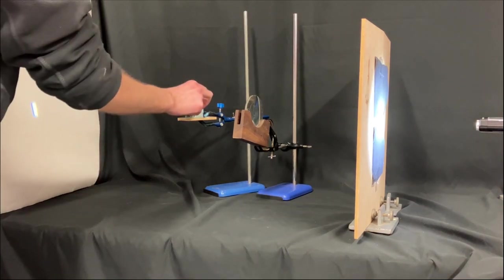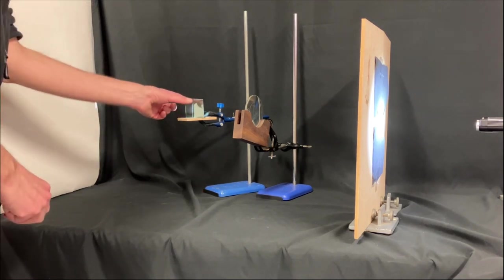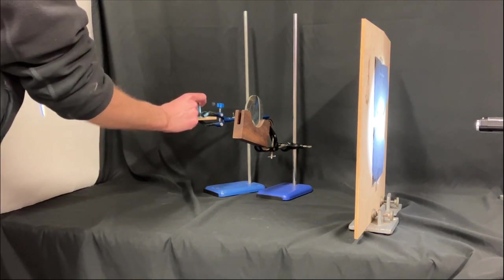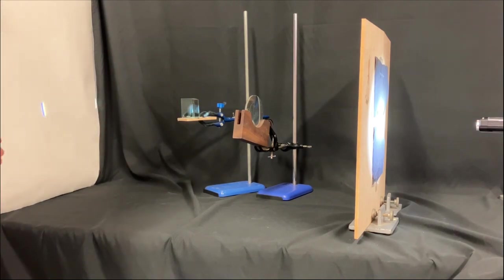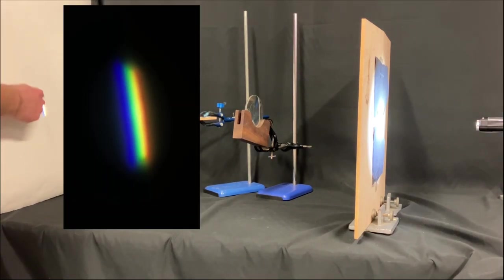Then we can pop in our prism in line with that light and adjust the prism so that we're getting a nice spectrum on the screen here.